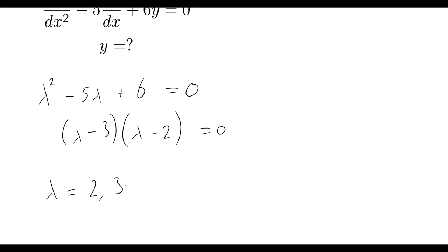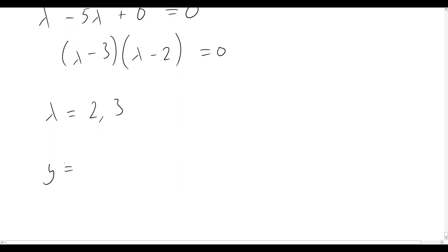Now we know that since we've got two real distinct roots, the form of our solution for our ordinary differential equation will be y equals c₁e to the power of lambda₁x plus c₂e to the power of lambda₂x. That's because we have two distinct real roots here.